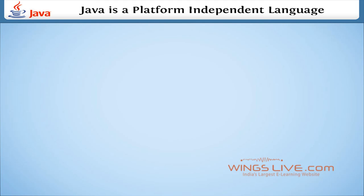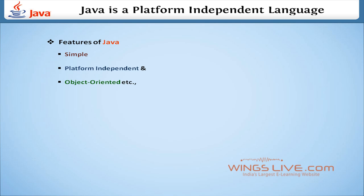Java is a platform-independent language. We have already discussed various features of Java, like simple, platform-independent, and object-oriented, and so on. Among them, platform-independent is the best feature of Java. Now in this lesson, we are going to discuss how Java is platform-independent.